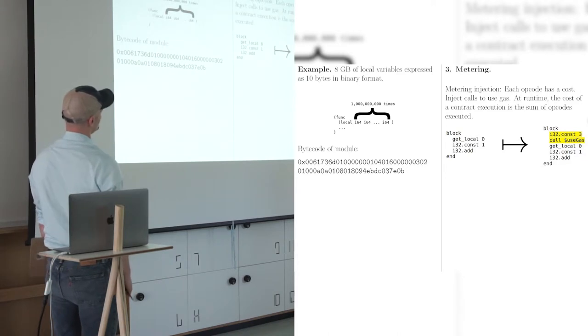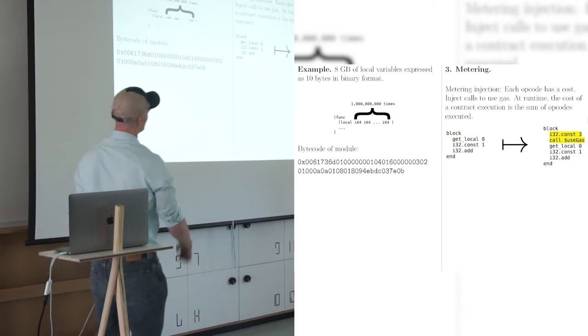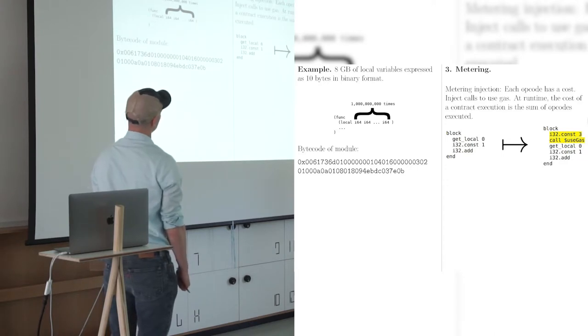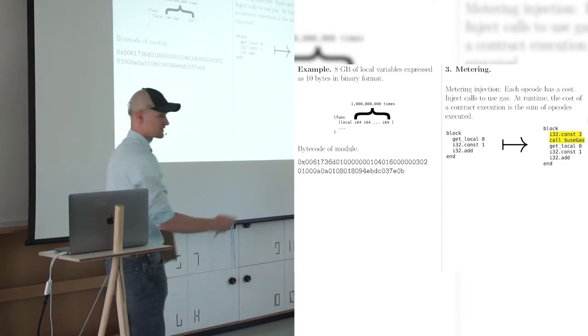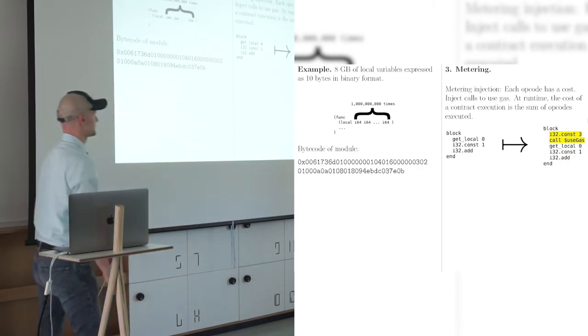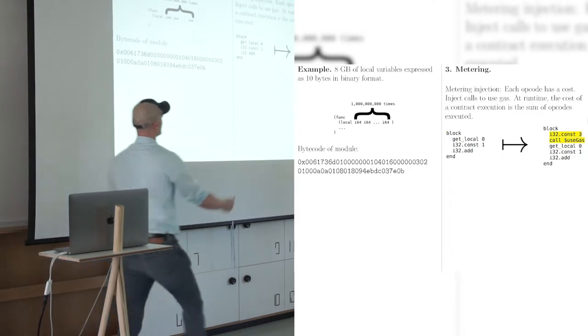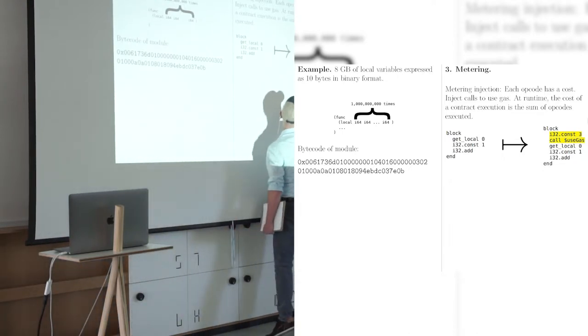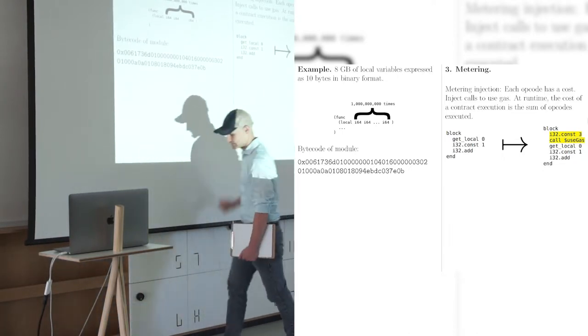So we, instead of doing, there's an optimization, okay, so maybe I should read it. Metering injection. Each opcode has a cost. Inject calls to use gas into the bytecode. At runtime, the cost of a contract execution is the sum of opcodes executed. So this is a sum model. We just sum everything up. It's simple. The model's nice because it's simple.